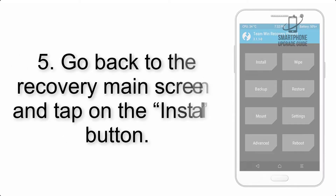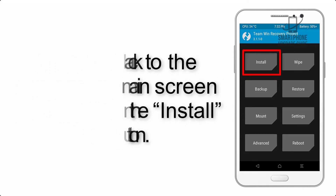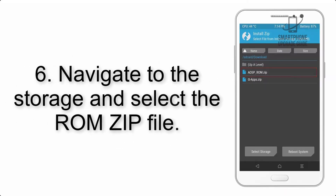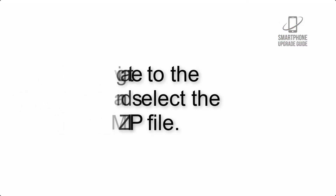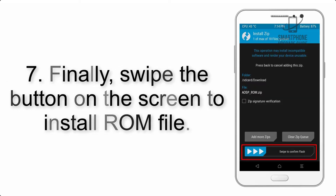Step 5: Go back to the recovery main screen and tap on the Install button. Step 6: Navigate to the storage and select the ROM zip file. Step 7: Finally, swipe the button on the screen to install the ROM file.